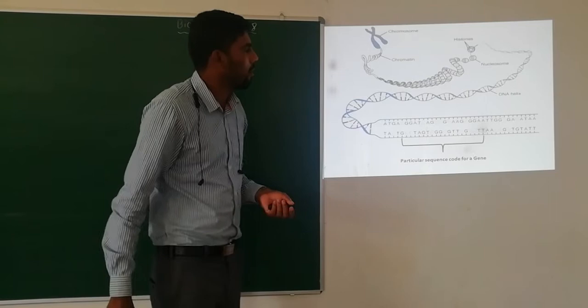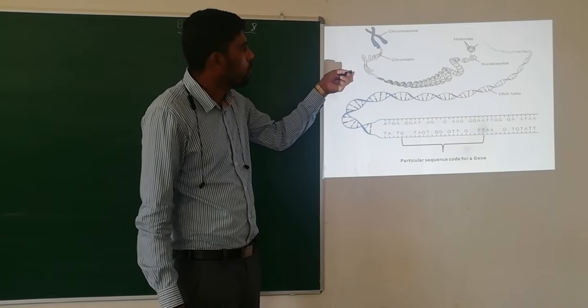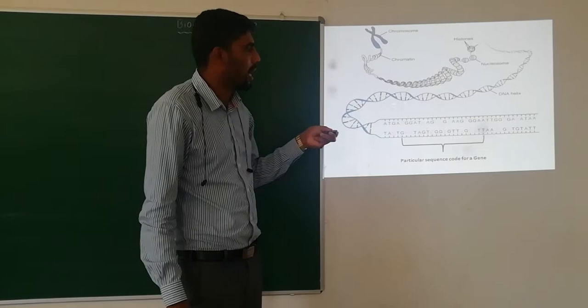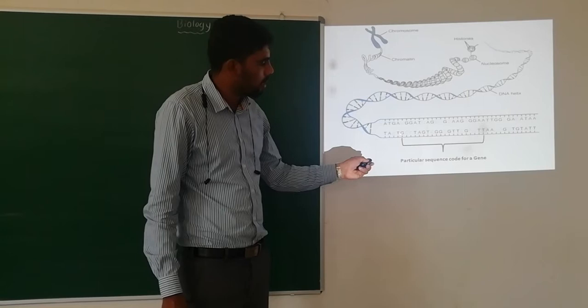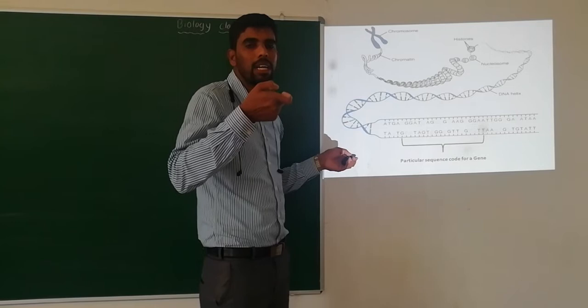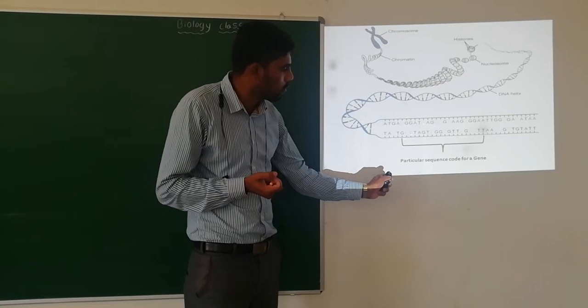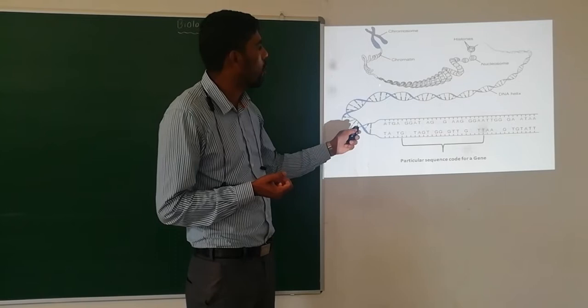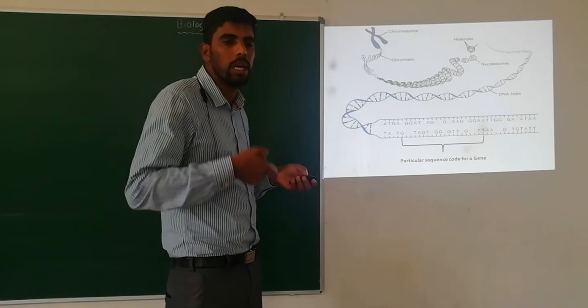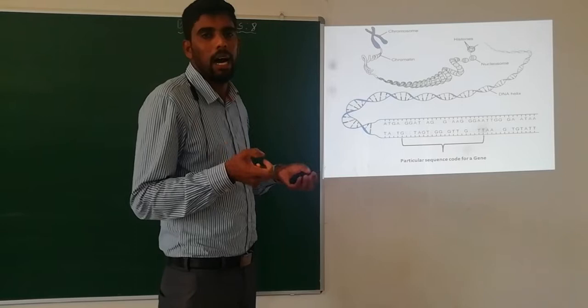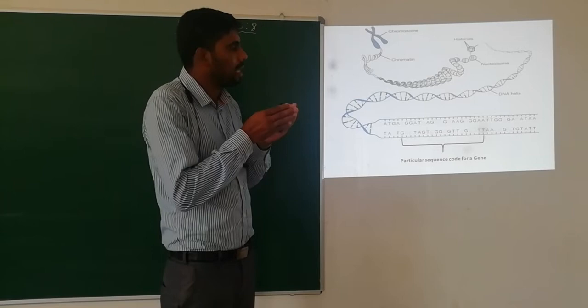Look at the picture. The chromosome is packed as a linear thread of DNA chain. The DNA has a particular nucleotide sequence. The nitrogen base sequence — a particular sequence codes for a particular gene, and the genes are present on the chromosome. Chromosomes are present within the nucleus. During cell division, the nucleus also divides; along with the nucleus, chromosomes also divide, and at that time genes segregate or separate.